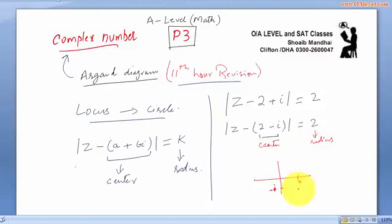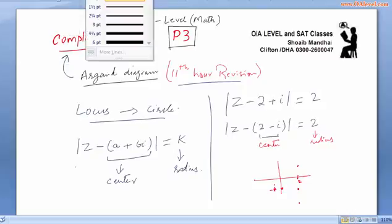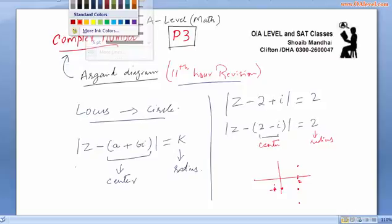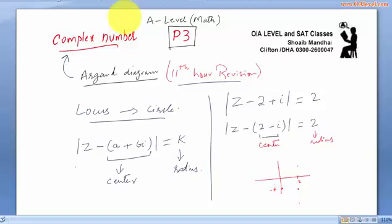This is the center and the radius would be here at 1, it would be like here, this 2 cuts the value like this. This is the center of a circle and we will sketch a circle with radius of 2. This would be our locus of this equation which represents a circle.